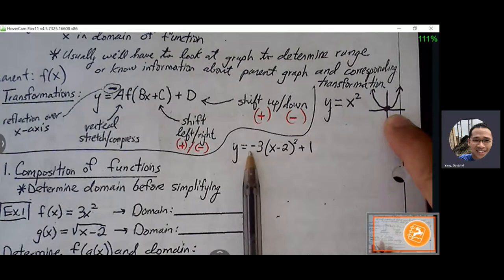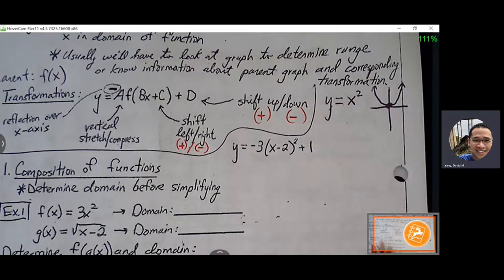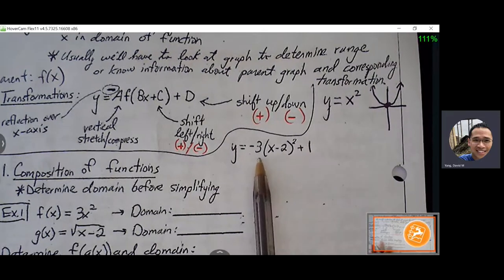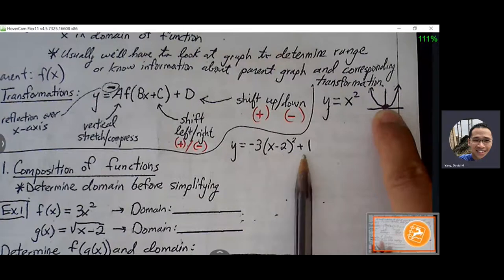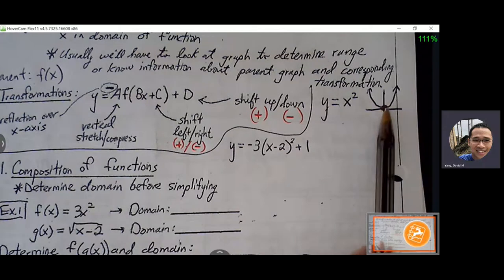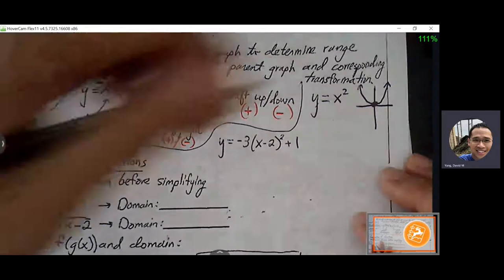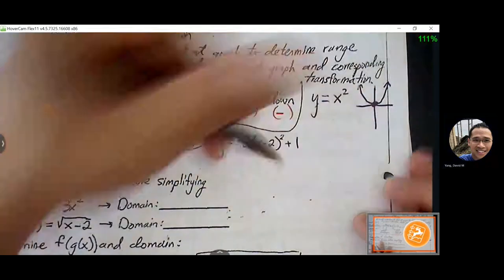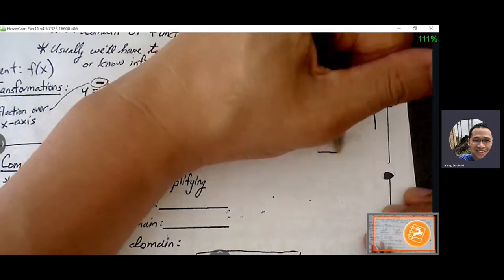The negative is going to flip the graph. The 3 is a separate thing — it's going to stretch the graph vertically. The minus 2 inside will shift it right, and the 1 outside will shift it up. If I just follow the path of this starting point, I can sketch out the rest of the graph. I know my graph is shifting right 2 and up 1, so I'll move the starting point there. It opens down because of the reflection and stretches by 3, making it more narrow.